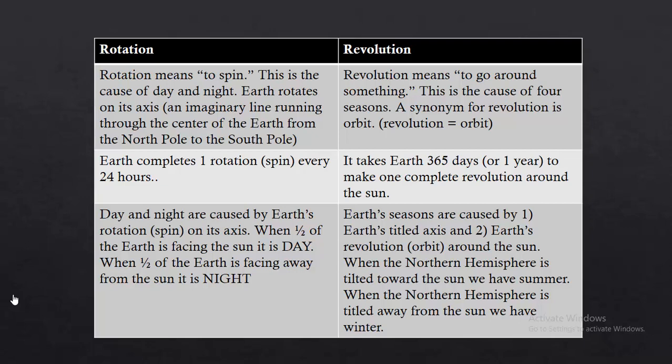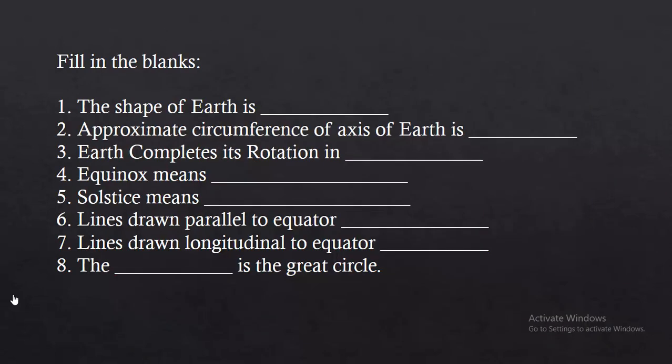So this was all about my lecture. I have kept a small activity as usual. Fill in the blanks: The shape of the Earth is dash. The approximate circumference of the equator of Earth is dash. Earth completes its rotation in — how many hours does it take? Equinox means — you have to write that here. Solstice means — you have to write that here. Lines drawn parallel to the equator are dash. Lines drawn longitudinal to the equator are dash. These are imaginary lines that help in map reading. The dash is the great circle of Earth.